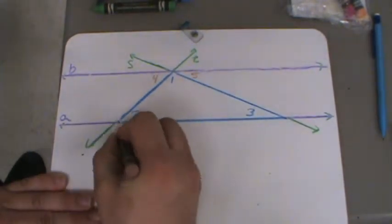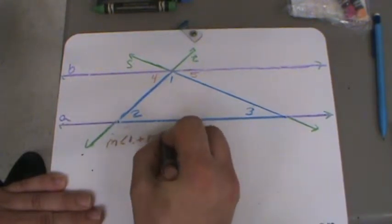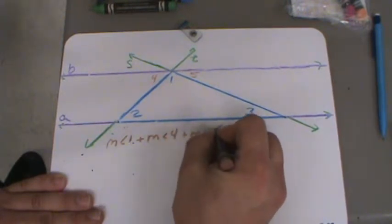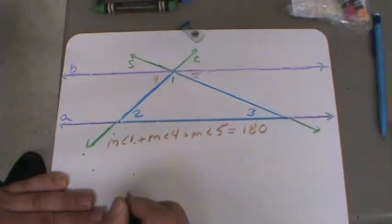So, we know that the measure of angle 1 plus the measure of angle 4 plus the measure of angle 5 is going to equal 180 degrees.